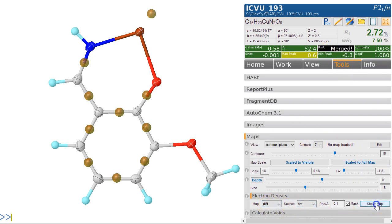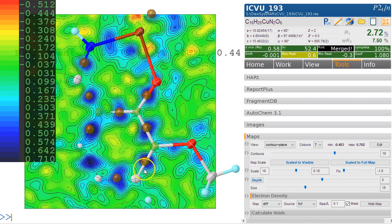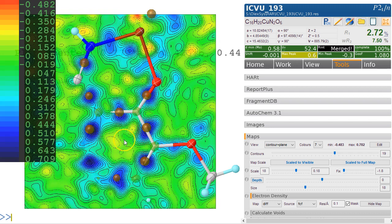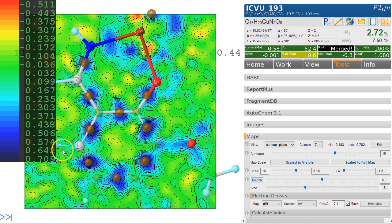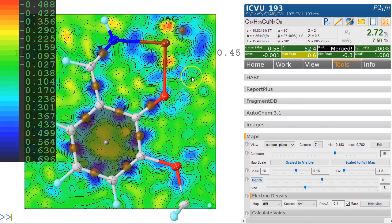What we need to do is select the atoms that we want to have in a plane—clicking on the depth button here. This aligns them in that plane. Now you can really see how the electron density has not been accounted for in those bonds.